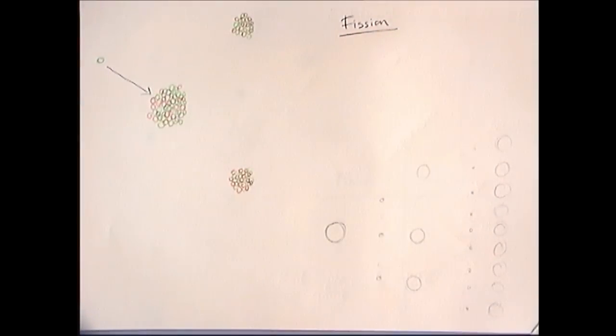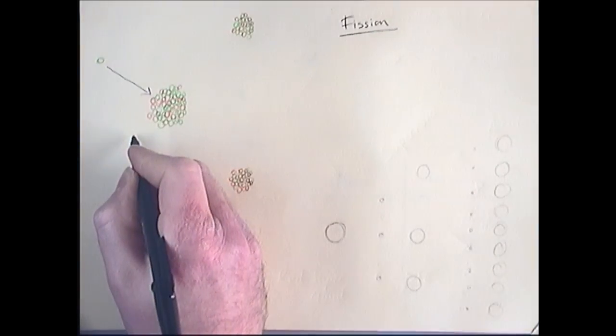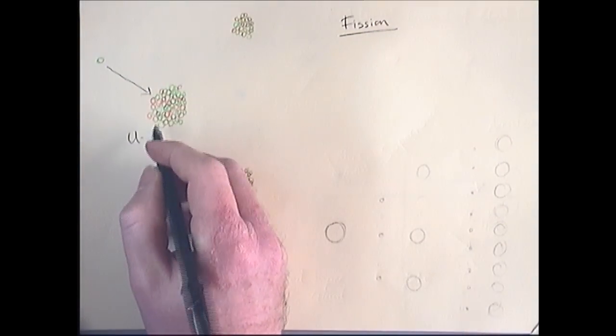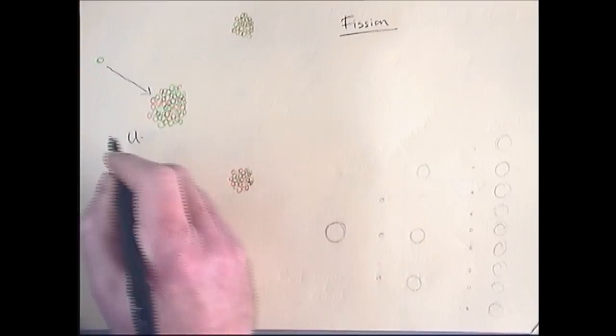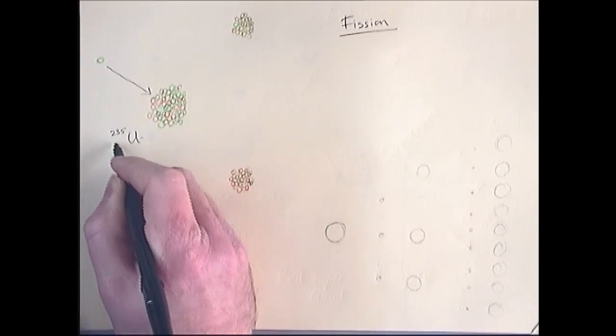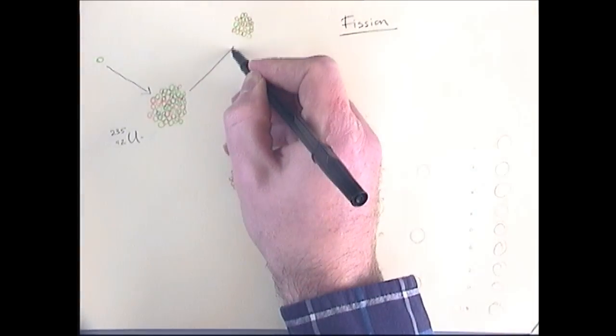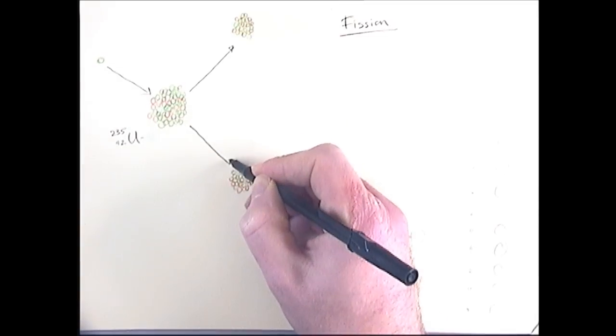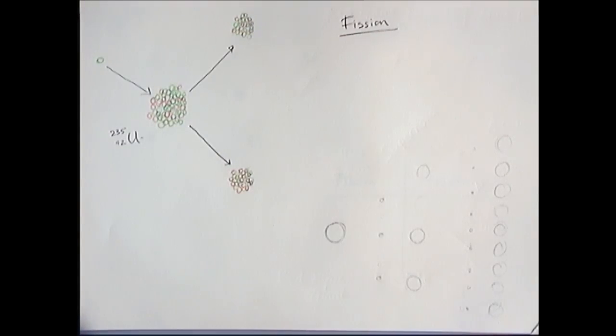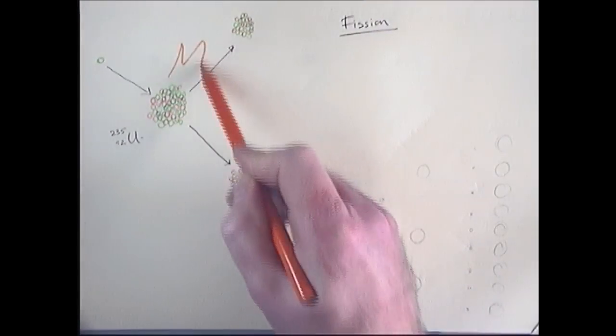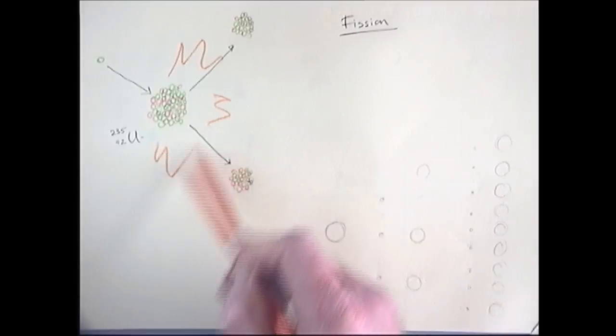The main type of nuclei we use here on Earth for nuclear fission is uranium, and it's the isotope uranium-235. We also use plutonium-239, but this is the main one. During the fission, the uranium splits into two daughter nuclei, and in this process, massive amounts of energy are released, huge amounts, much more than any chemical reaction.